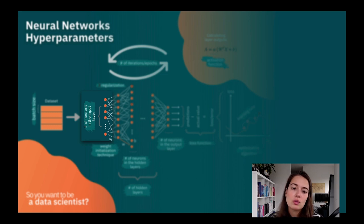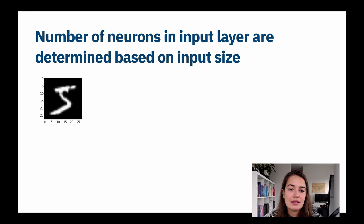The first thing we want to look into is the number of neurons in the input layer. The number of neurons in the input layer is determined by your data. Let's look at an example. If you have images that are 28 by 28 pixels, you're going to have 28 times 28 neurons, that is 784 neurons, because each pixel is going to be inputted to one neuron.